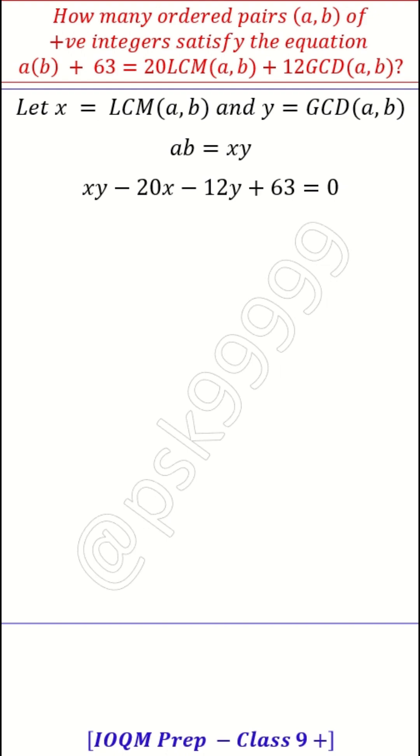Now, make it into products. Product of x term and y term. So how can we do that? We can call this (x - 12) into (y - 20) and the remaining integer, whatever is remaining, you take it to the other side, which is 177.